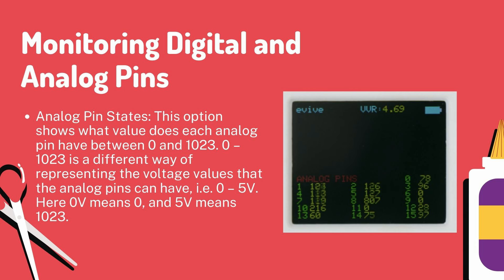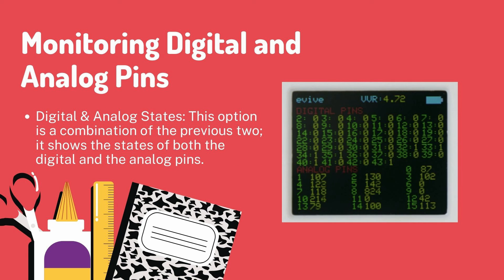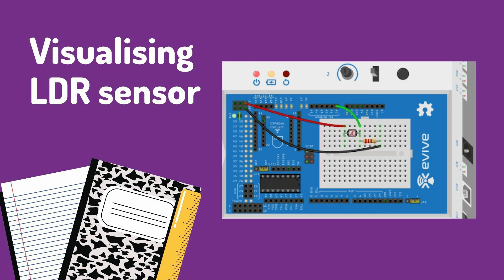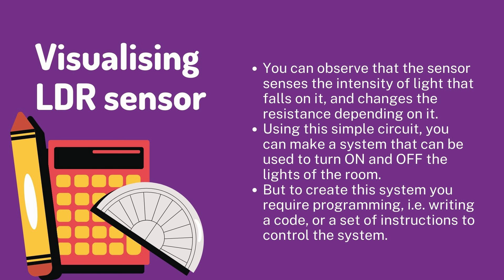The range of 0 to 1023 is actually a different way of representing the voltage values that the analog pins can have. For example, zero volts means zero and five volts means 1023. The digital and analog states option is a combination of the previous two — it shows the states of both the digital and the analog pins.